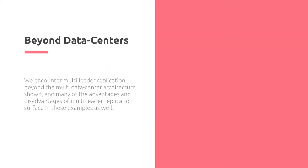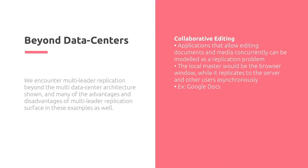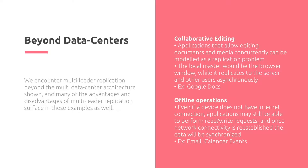Even beyond data centers, we encounter multi-leader replication, and many of its advantages and disadvantages surface in these examples as well. First is collaborative editing: applications that allow editing documents and media concurrently can be modeled as a replication problem, where the local master is the browser window while it replicates to the server and other users asynchronously — Google Docs is an example. Another example is offline operations, such as email and calendar events, where a device allows operations to occur offline and once network connectivity is re-established, data is re-synchronized to the other masters.